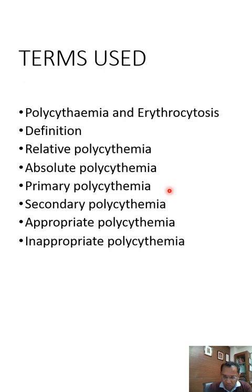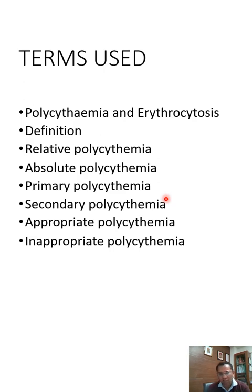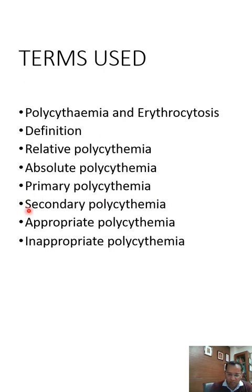The other two terms are primary and secondary polycythemia. Primary means there is a genetic mutation — most commonly a JAK2 mutation — and there is no normal erythropoietin feedback loop. In spite of low EPO levels, red cell mass still increases; this is primary polycythemia. Secondary polycythemia has no genetic mutation. It can be appropriate — when SpO2 or oxygen levels are reduced and the body compensates — or inappropriate, when SpO2 is normal but a tumor or other condition inappropriately drives increased red cell mass.